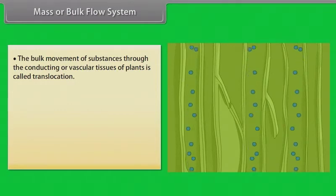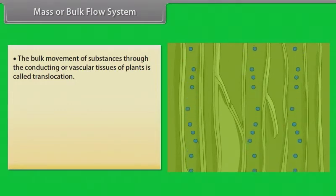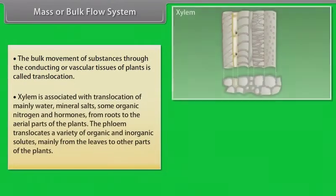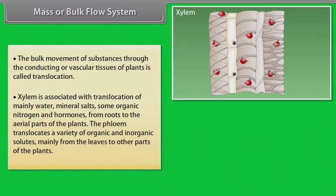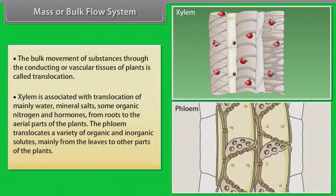The higher plants have highly specialized vascular tissues — xylem and phloem. Xylem is associated with translocation of mainly water, mineral salts, some organic nitrogen and hormones, from roots to the aerial parts of the plants. The phloem translocates a variety of organic and inorganic solutes, mainly from the leaves to other parts of the plants.